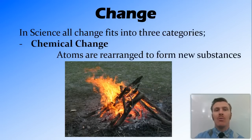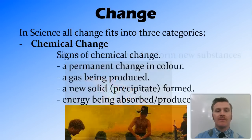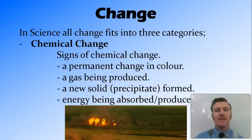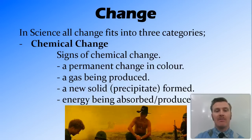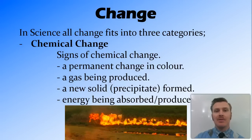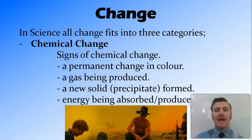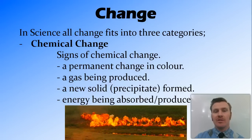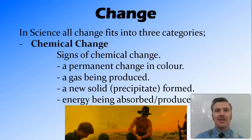Chemical change works when atoms are rearranged to form new substances. Some signs that chemical change is occurring include a permanent change in colour that can't be reversed, a gas being produced, a new solid or precipitate being formed, and energy being absorbed or produced — this can be in the form of heat energy or light energy.